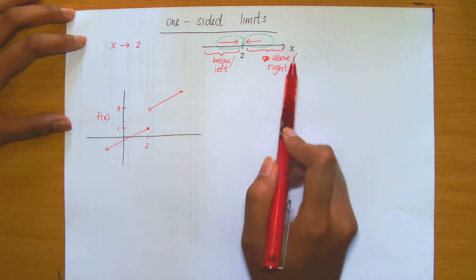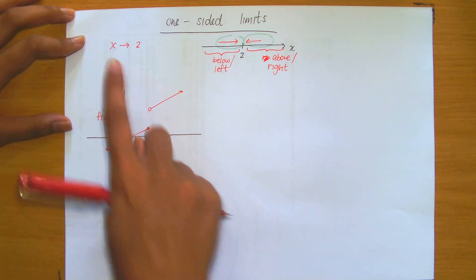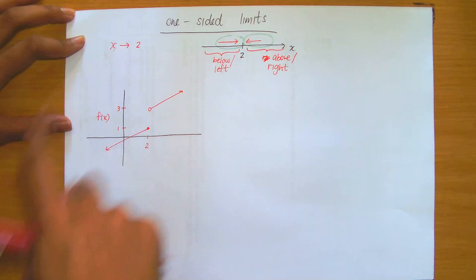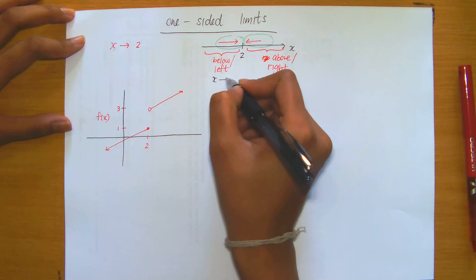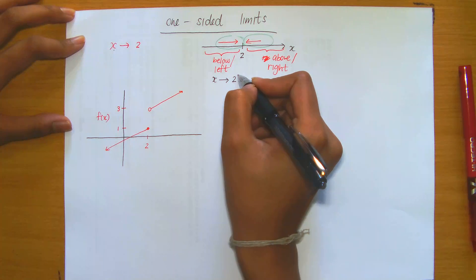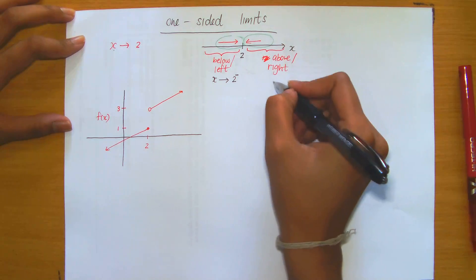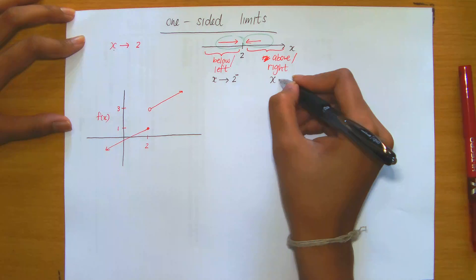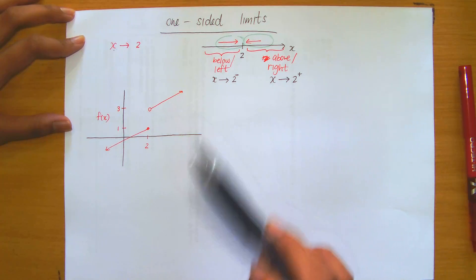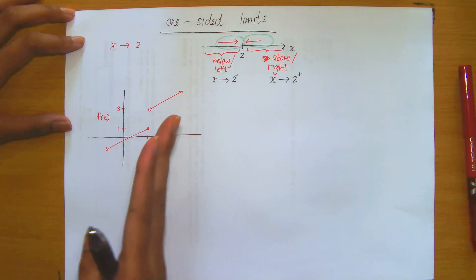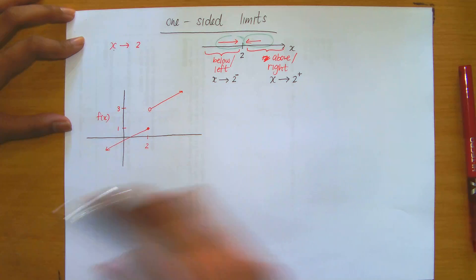Graphically speaking, this makes sense: the values above 2 are on the right-hand side, and the values below 2 are on the left-hand side. In arrow notation, when approaching 2 from the left, we write x → 2 with a superscript minus. When approaching from the right, we write x → 2 with a superscript plus. When we're talking about one-sided limits, we are only working with one of these two cases — either below or above — so make sure you understand the notation.